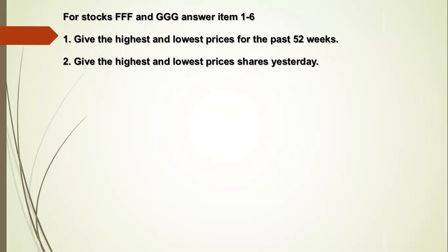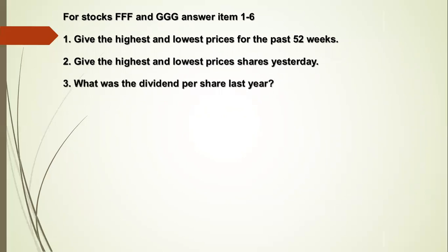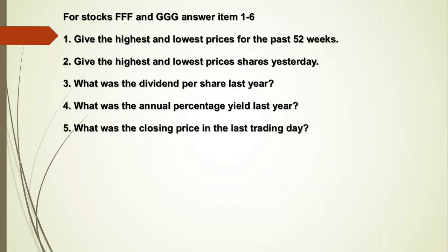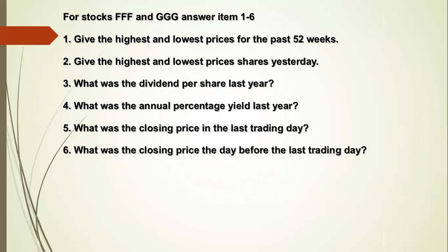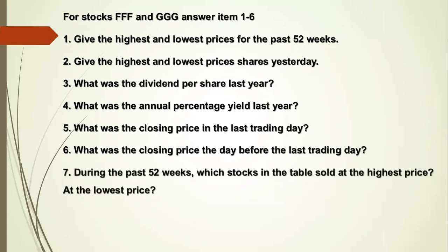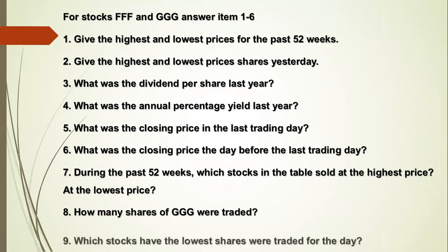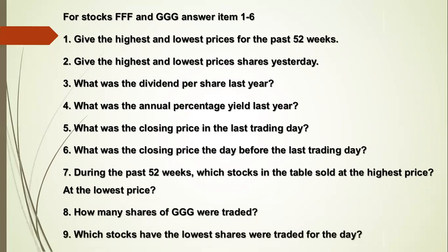Number three: what was the dividend per share last year? Number four: what was the annual percentage yield last year? Number five: what was the closing price on the last trading day? Number six: what was the closing price the day before the last trading day? Number seven: during the past 52 weeks, which stock sold at the highest price and which at the lowest? Number eight: how many shares of GGG were traded? Number nine: which stock had the lowest shares traded for the day?